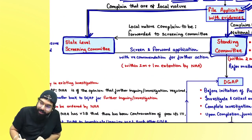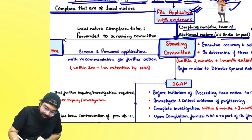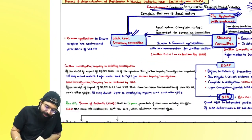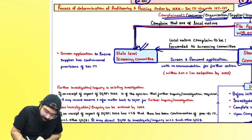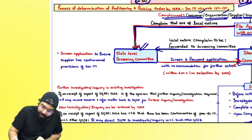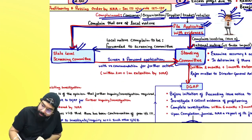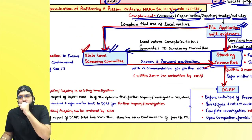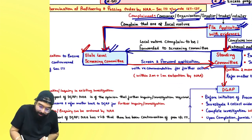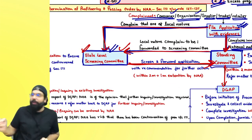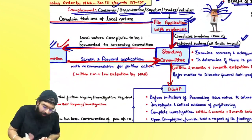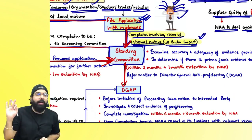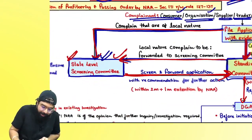If by chance you go directly to the standing committee for a local issue, they will not throw your application — they will send it to the screening committee. They will screen the application. If it comes here and it relates to a state-level local nature complaint, they will send it there. You should go to the standing committee if it is of national or all-India impact, otherwise go to the state-level screening committee.